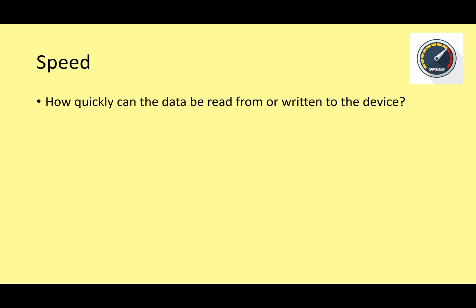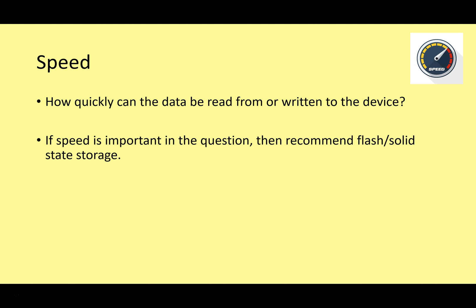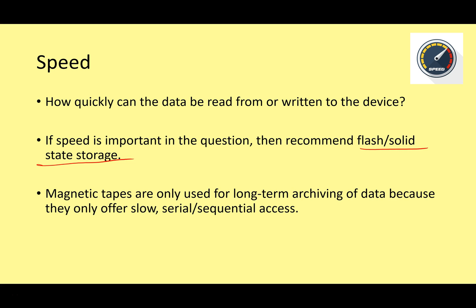For speed, if it's really important you need flash or solid state storage — it's the fastest medium for reading and writing data. Magnetic tapes are not used where speed is required; they're used for long-term archiving because they only offer serial or sequential access. That means if you have 100 files and want file 100, you must go through files 1 through 99 first. Other storage types like hard drives and optical drives offer direct access — you can go straight to the data.